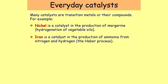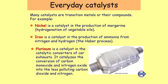Iron — you may have looked at the Haber process for making fertilisers — iron is the catalyst for the production of ammonia from nitrogen and hydrogen. Platinum, also from the fertilisers topic, is the catalyst for the Ostwald process. Platinum is also found in the exhaust pipes of many cars, where it converts poisonous and polluting gases like carbon monoxide and nitrogen oxide into less polluting products like carbon dioxide and nitrogen.